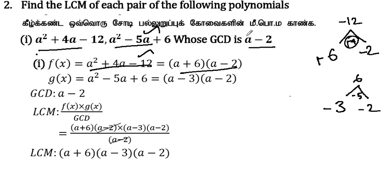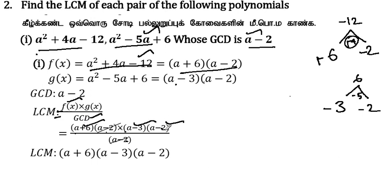Now applying the formula: LCM = f(x) into g(x) divided by GCD. f(x) is (a + 6)(a - 2), g(x) is (a - 3)(a - 2), and the GCD value is (a - 2). We cancel the common factor (a - 2), giving us the LCM.